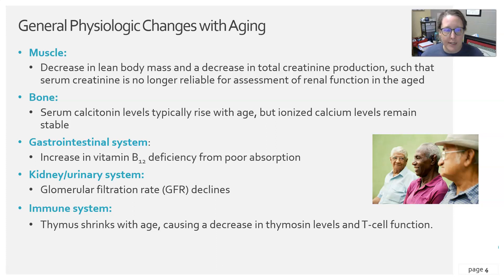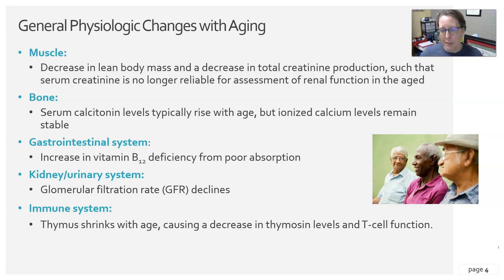In the GI system, there will be an increase in vitamin B12 deficiency from poor absorption. There is also poor absorption of other vitamins and nutrients due to aging in the GI system.